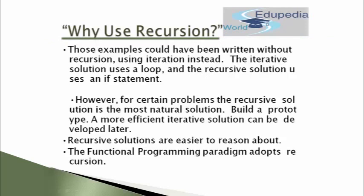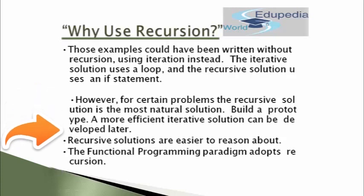Those examples could have been written without recursion, using iteration instead. The iterative solution uses a loop and the recursive solution uses an if statement. There are examples we will study shortly that can also be written with iteration. But recursion minimizes the lines of code. However, for certain problems the recursive solution is the most natural solution — you can build a prototype and a more efficient iterative solution can be developed later. Recursive solutions are easier to reason about, and the functional programming paradigm adopts recursion.